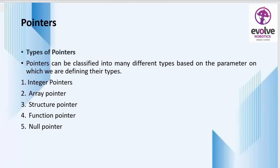The next topic is the types of pointers. Pointers can be classified into many different types based on the parameters on which we define their types. There are five types of pointers: integer pointers, array pointers, structure pointers, function pointers, and null pointers.